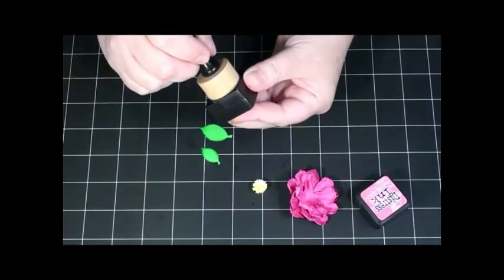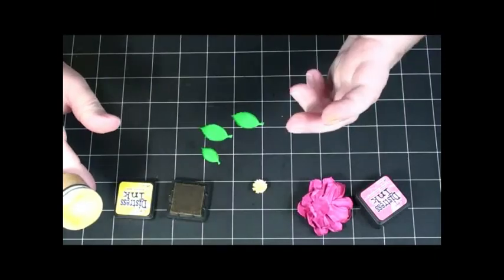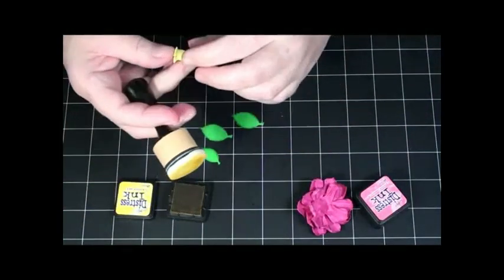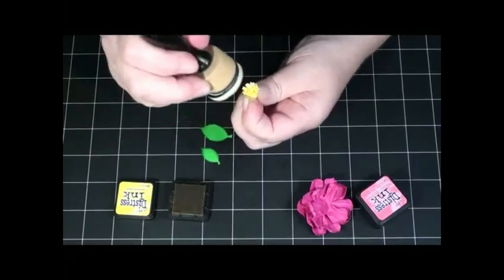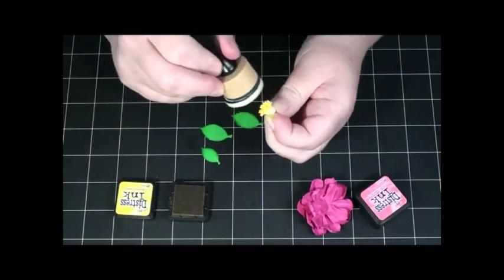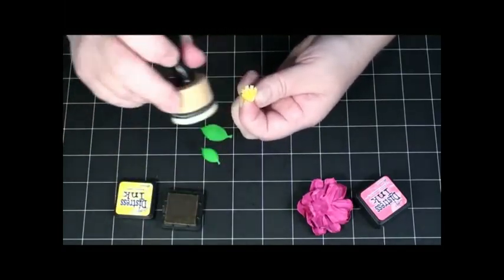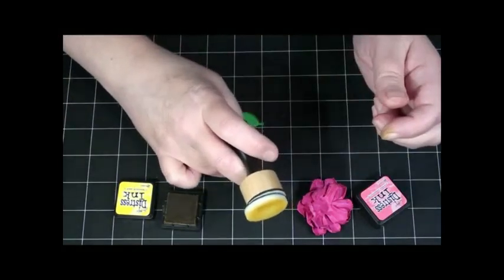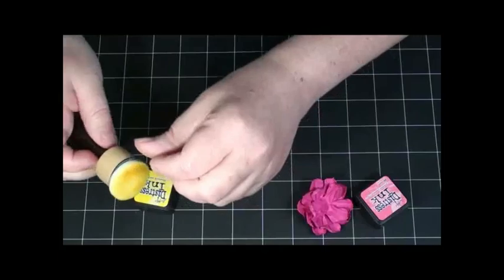So there's the Mowed Lawn, and I store my sponges that go that color underneath. For the center, I want to use Mustard Seed. I don't want to get any green on there. I'm just going to dab at that center. It's just a smidge darker of a color, but I think it just adds that little something.